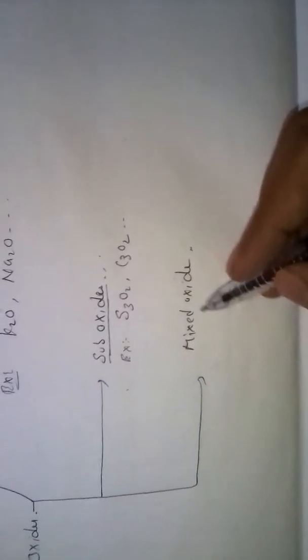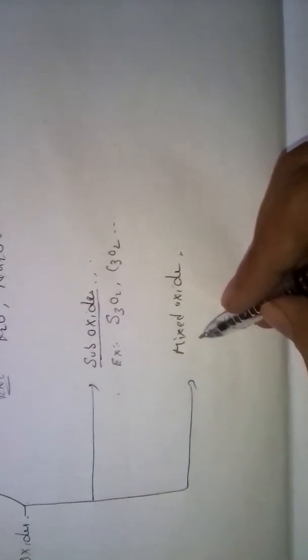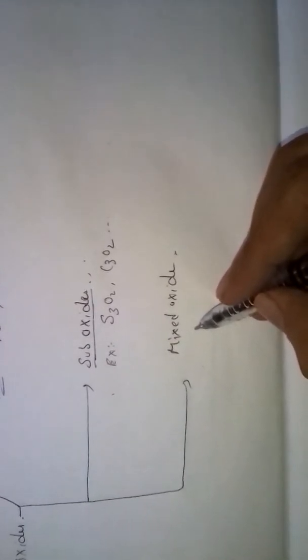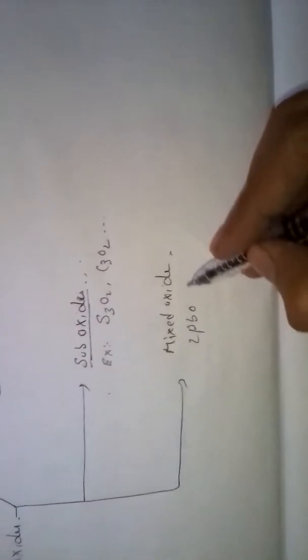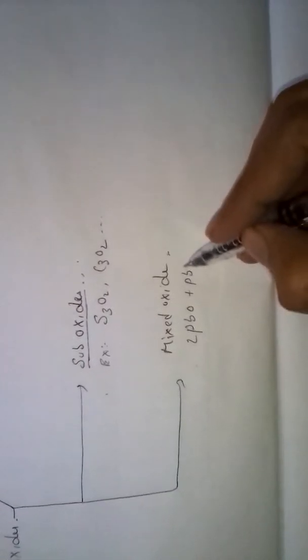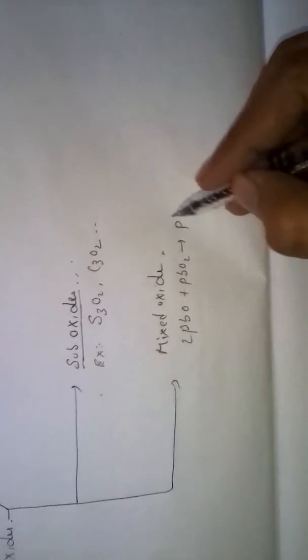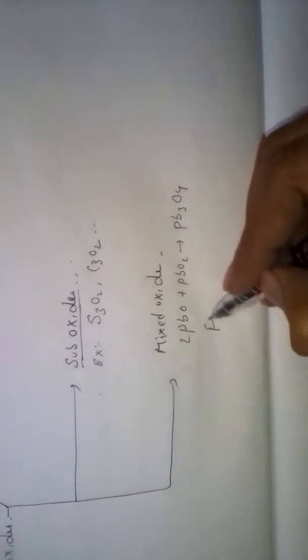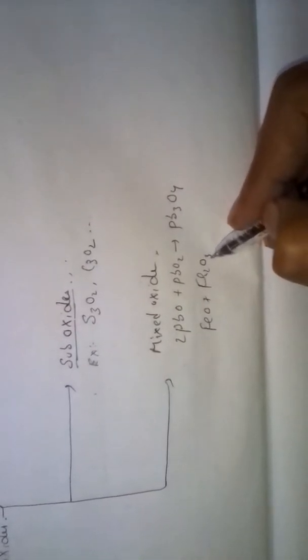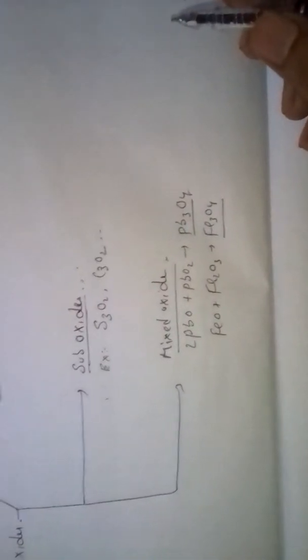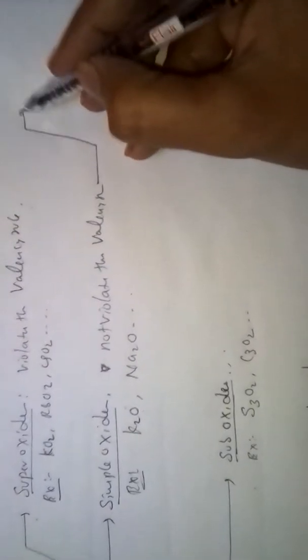Mixed Oxides also violate the valency rule. These are formed by 2 types of oxides mixed together. For example, PbO plus PbO2 gives rise to Pb3O4, and FeO plus Fe2O3 gives rise to Fe3O4. These are called Mixed Oxides.